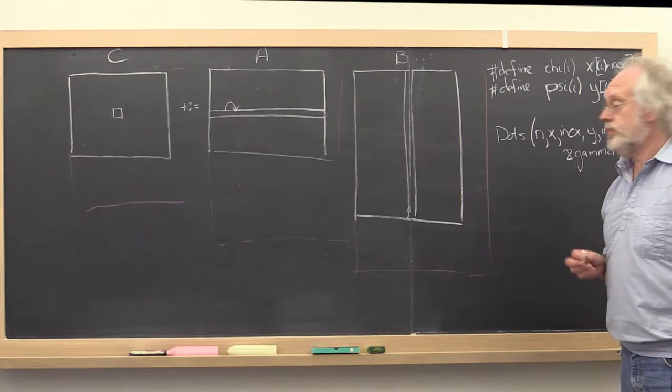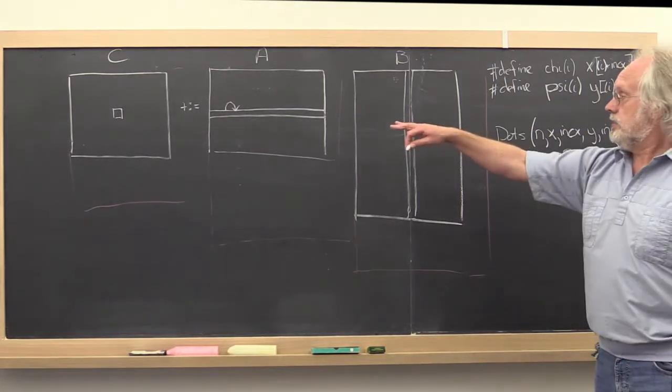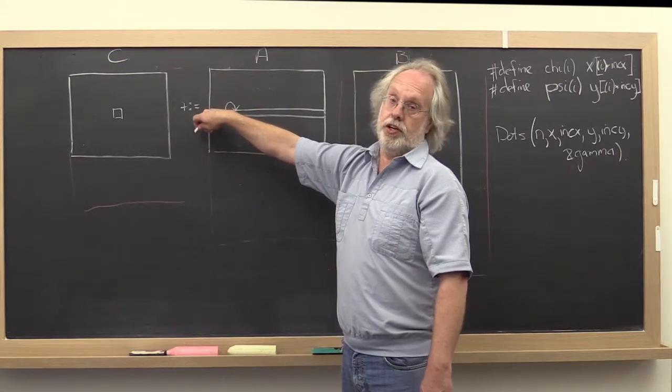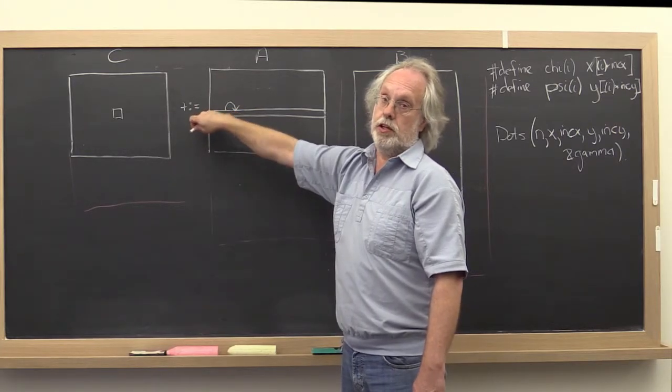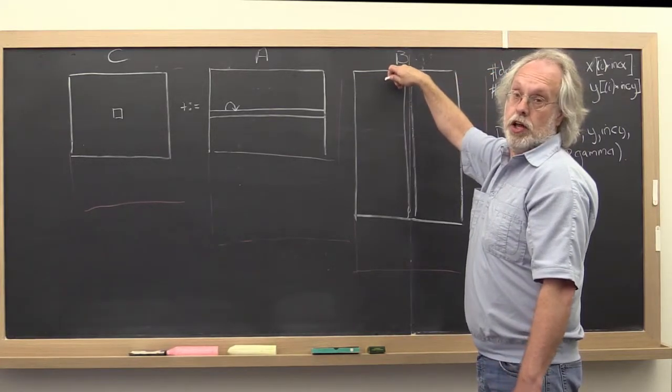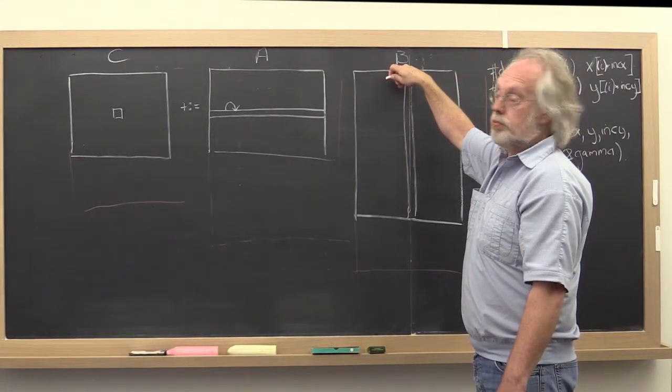And then you would pass in the address of the first entry of the row of A with which you want to do a dot product and the address of the first element of the column of B with which you want to do the dot product.